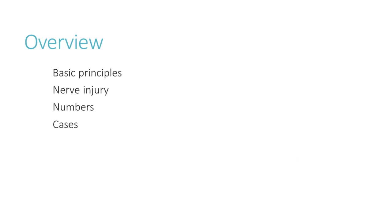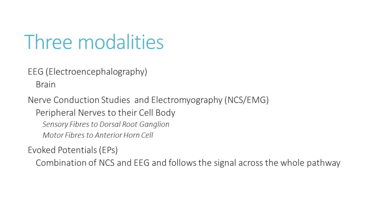There are three main modalities which we perform. We have the EEG, where we look at the brain waves. We have nerve conduction studies and electromyography, the NCS-EMG, where we look at primarily the large fibre pathways for the sensory nerves to their primary cell body, which is a dorsal root ganglion, and for the motor fibres to the anterior horn cell within the spinal cord. We have evoked potentials as well, which combine both the NCS and the EEG components, and follow the signal across the entire pathway.